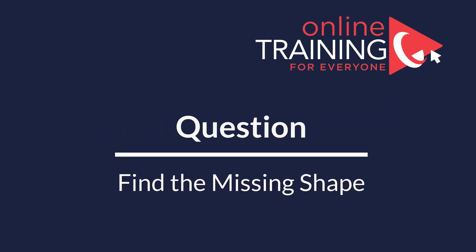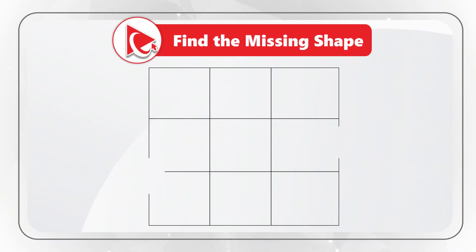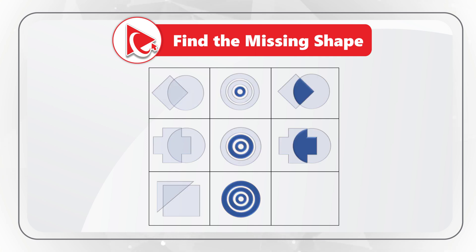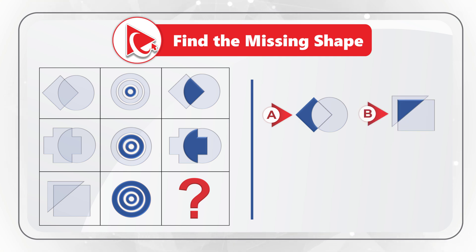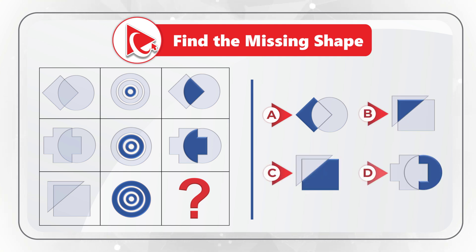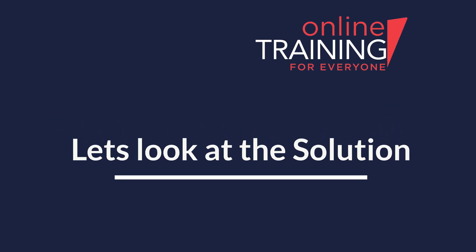One of the questions I love the most are the ones with the missing shape. You're presented with a three by three matrix — eight of the nine squares have shapes and one is missing. You need to find the missing shape by looking at four different choices: A, B, C, and D. Take a close look to see if you can come up with the solution.